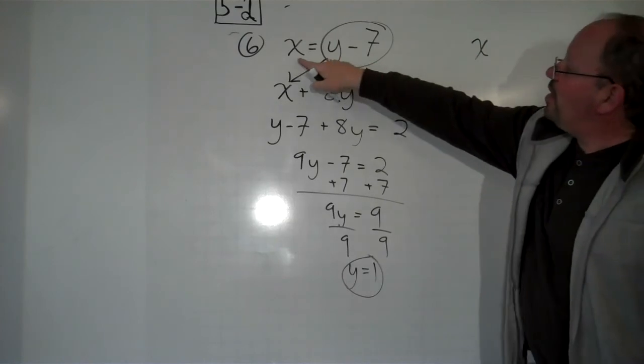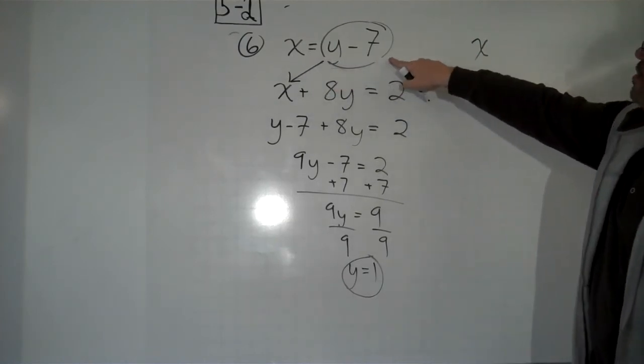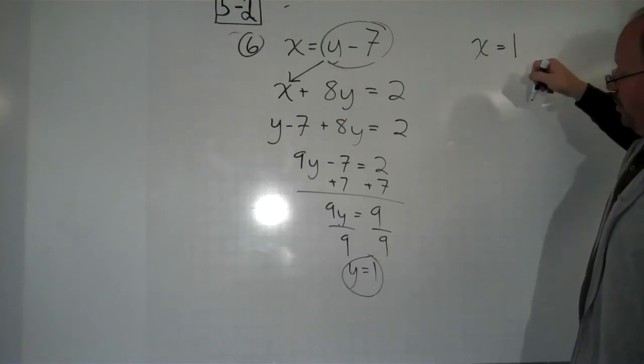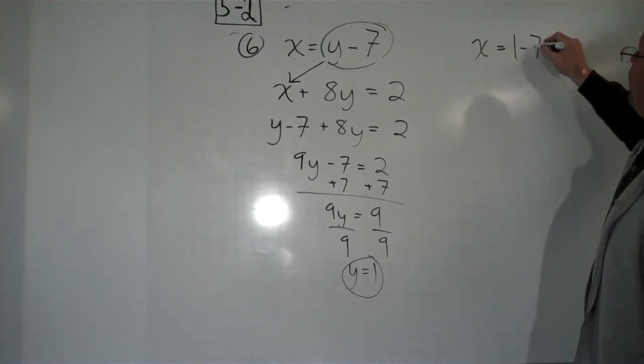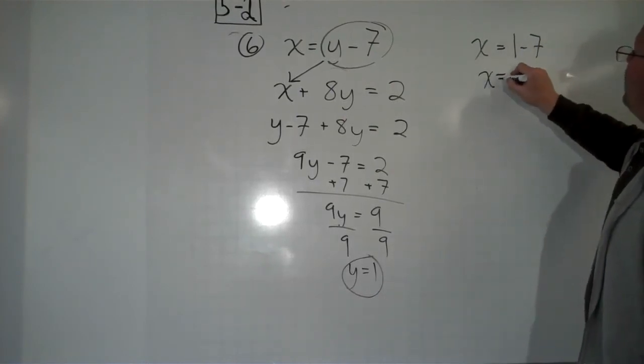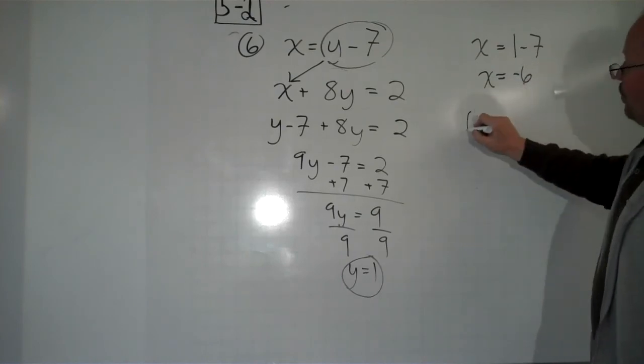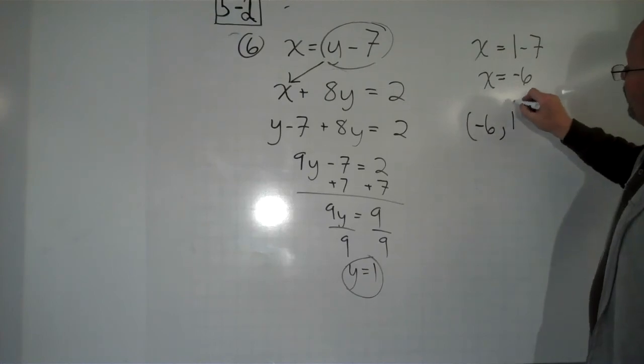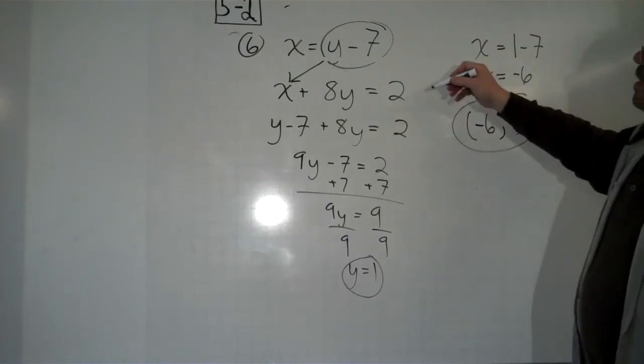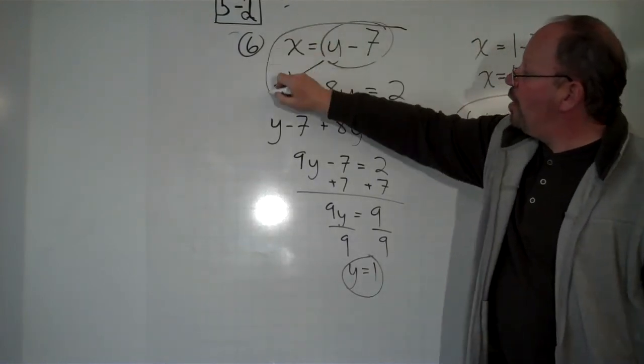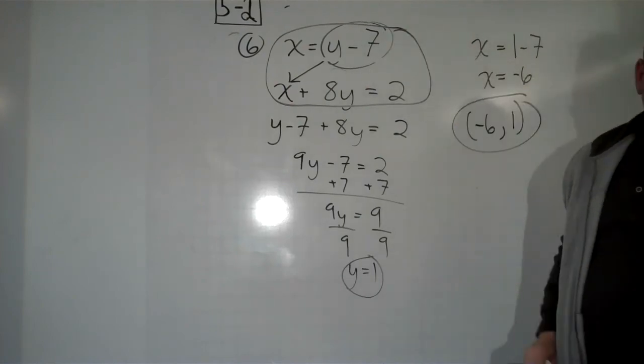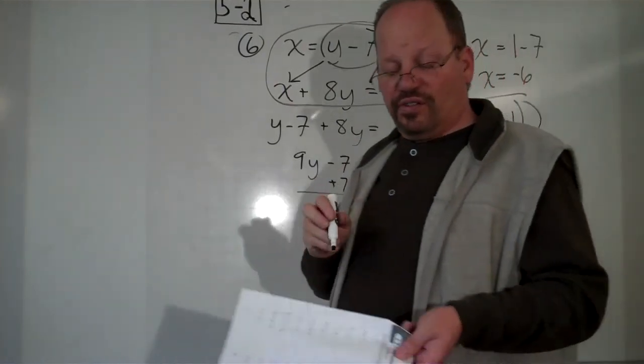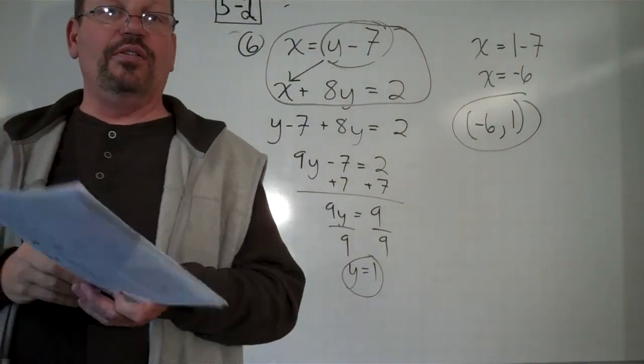Now that we know y equals 1, we find x. The easiest way is to use this equation. x equals y. y was 1 minus 7. So x equals negative 6. And we find our point of intersection at negative 6 comma 1. If we were to graph these two lines that we got in the problem to start with, we would find this is the point where they intersect. And that's what the solution is.